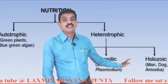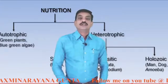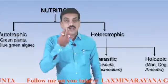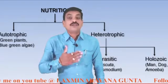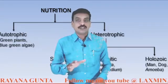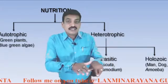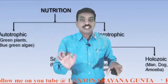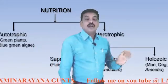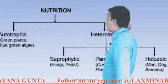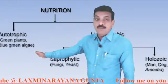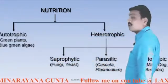The third type is holozoic nutrition. In this type of nutrition, organisms obtain nutrition by taking in solid or liquid food, and in the digestive tract the food is digested. After digestion, the food is sent into the blood, which is called absorption. The food sent into the blood is supplied to each and every cell in the body, which is called assimilation. Heterotrophic nutrition is divided into saprophytic nutrition — examples fungi and yeast — parasitic nutrition, and holozoic nutrition.